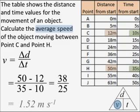38 divided by 25, which is 1.52 metres per second.